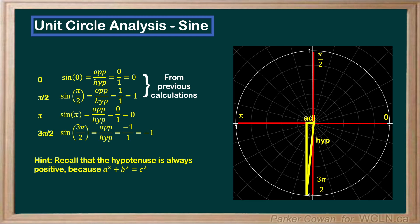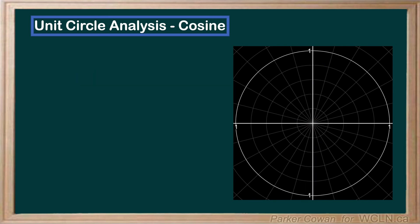Thus, we get an answer for sine 3 pi over 2 of negative 1. By now we may have noticed a pattern emerge.